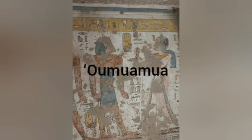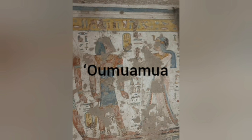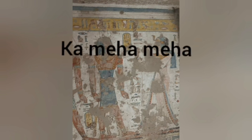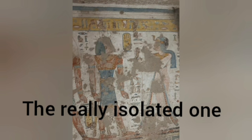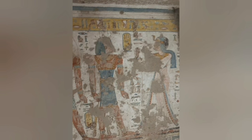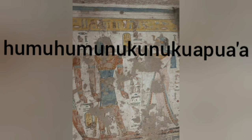For example, in Hawaii, you have words like Oumuamua, and because of the repetition, that means it has a feature that is consistent with other Polynesian languages, like the word Kamehameha. There are other ones I could use, but they tend to do this. In Hawaii, there's a state fish which is called Humuhumu Nuku Nuku Apua'a.